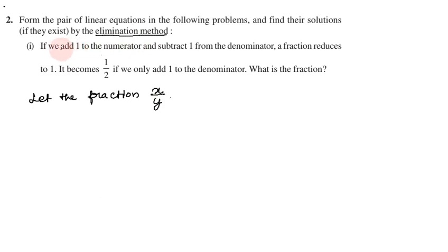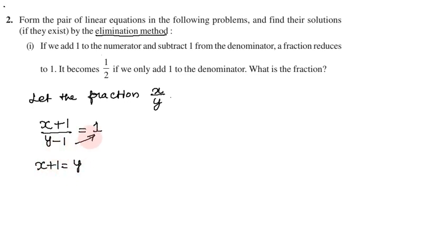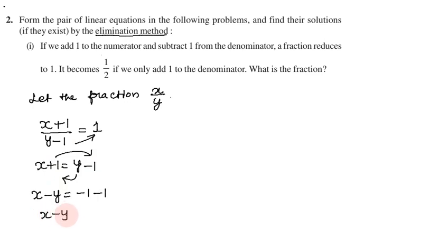First condition: if we add 1 to the numerator and subtract 1 from the denominator, the fraction reduces to 1. So (x+1)/(y-1) = 1. Cross multiply: x + 1 = y - 1, which gives x minus y equal to minus 2. This is equation number 1.